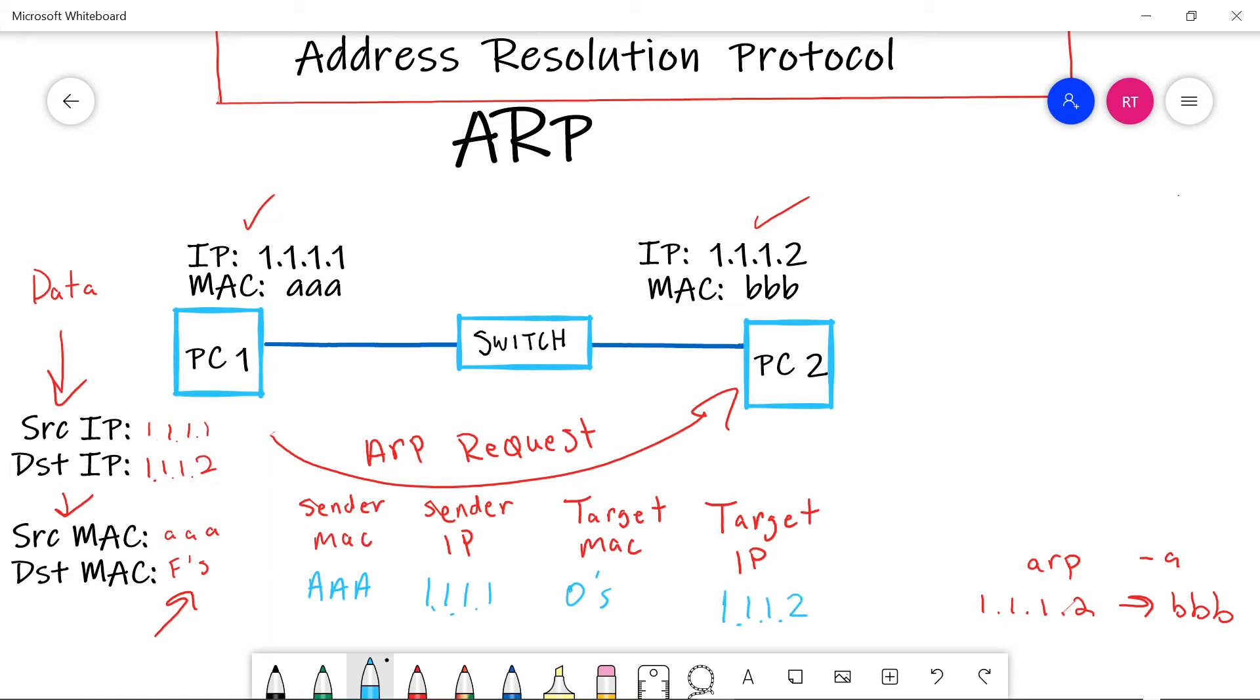So PC two received the ARP request and said, Hey, I'm 1.1.1.2. Here is the MAC address info you requested. Now, it does this in a different message called the ARP reply. So that's going in this direction. Now, this message is not going to be a broadcast message. This message is going to be directly to PC one. So the destination and source MAC address info, that's going to change. The source MAC is going to be the MAC of PC two, which is B, B, B, B. And the destination MAC address is going to be the MAC address of PC one, which is all A's.